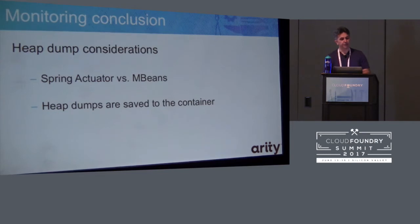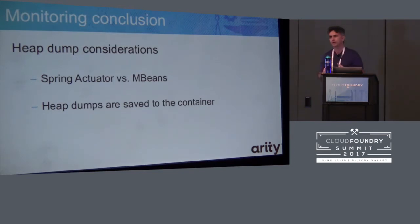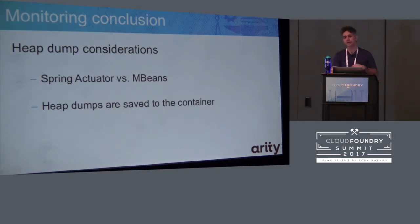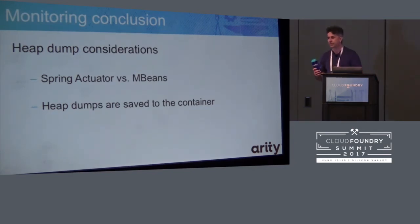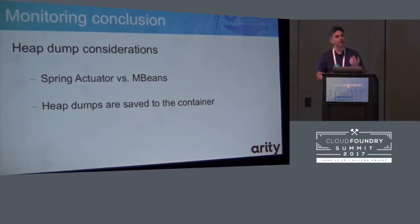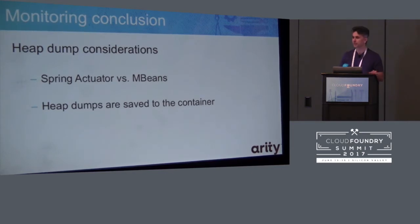Coming back to the heap dump issue: when you request a heap dump, it's saved into the container, so you have to increase the disk space available on your container or else your heap dump doesn't work. When using the mBean mechanism, you also have to log into the container to find the file and then copy it out using SCP — it works, but it's a bit clunky. The Spring Actuator mechanism is much easier: it does the dump for you, gzips the file, and drops it onto your local hard drive.